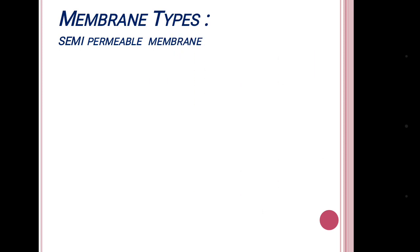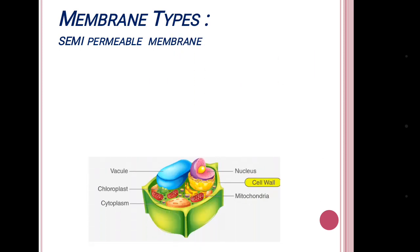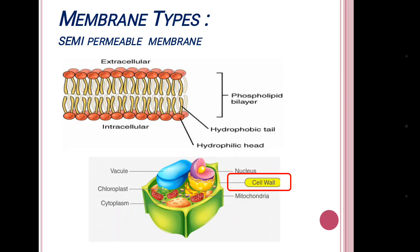Next is semi-permeable membrane. The cell wall is permeable, but the cell membrane below the cell wall is semi-permeable because the phospholipid bilayer — the structure of the semi-permeable cell membrane — allows only the solvent to pass.